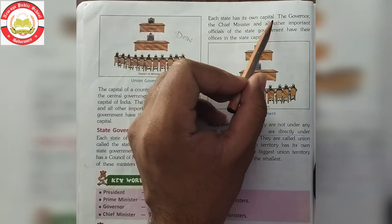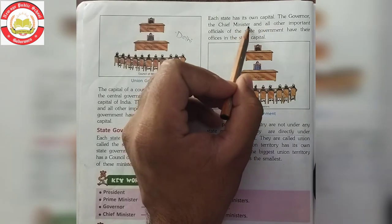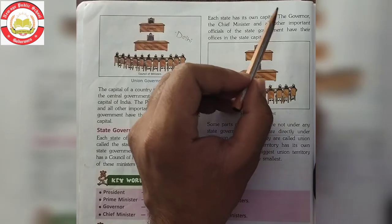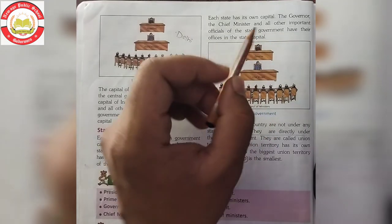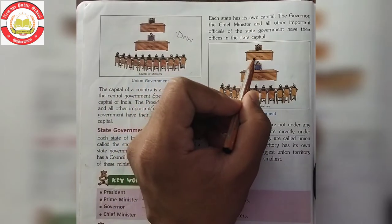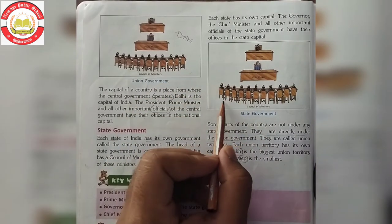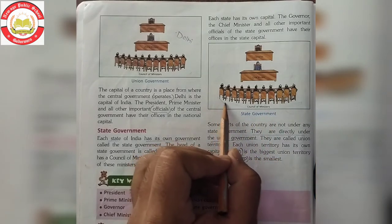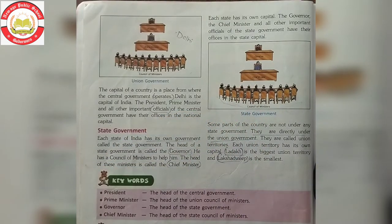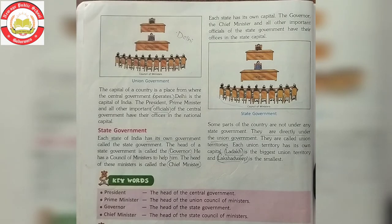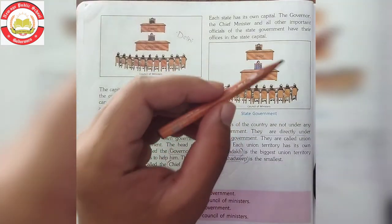Each state has its own capital. Har ek state ka apna ek khud ka capital hota hai. The Governor, the Chief Minister, and all other important officials of the state government have their offices in the state capital. Sabse bade head ho gaye Governor, then ek poora council of ministers diya jaayega help ke liye, aur in ministers ka head hoga Chief Minister. Central government poori country ko run karegi, aur itni badi country ka itna bada region look after karne ke liye alag-alag state governments banayi gayi hain.